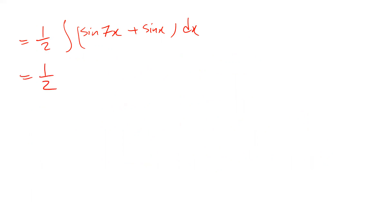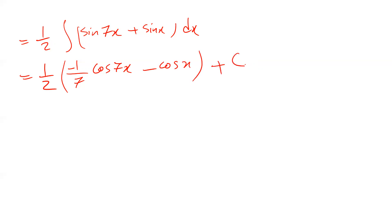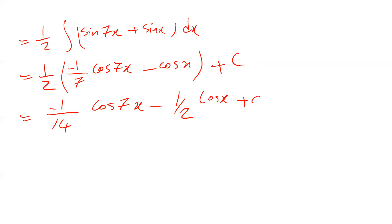Which will be equal to one divided by two: the integral of sine 7x gives minus one divided by seven cosine 7x, and the integral of sine x gives minus cosine x, plus C, which is the constant of integration. Therefore, the solution will be equal to minus one divided by 14 cosine 7x minus one divided by two cosine x plus C.